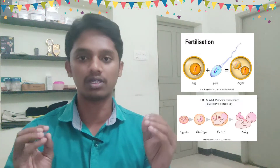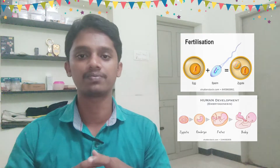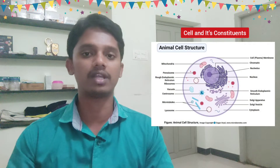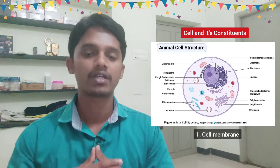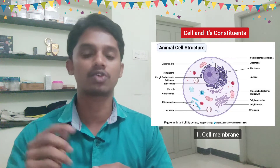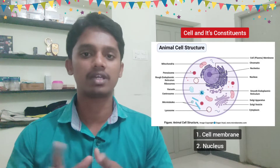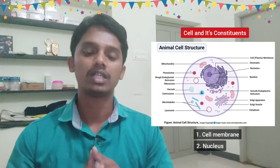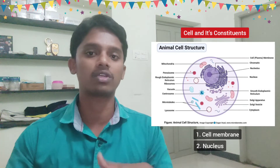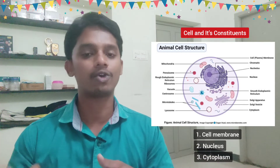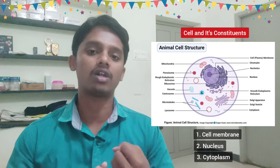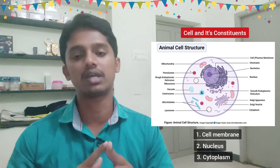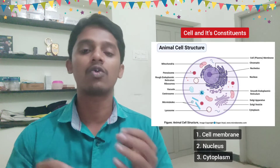Now, if you look at a basic cell, what are the constituents? There are three main components. The first is the cell membrane — that is the boundary line, also called the plasma membrane. The second is the nucleus — located near the center of the cell, containing genetic material. The third is the cytoplasm, which contains organelles such as mitochondria, lysosomes, ribosomes, centrosomes, and the Golgi apparatus. These are the organelles of the cell.